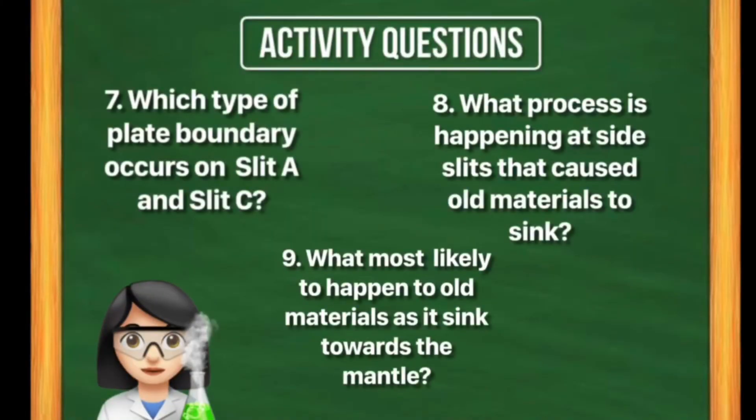Activity questions: Number 7, which type of plate boundary occurs on slit A and slit C? Number 8, what process is happening at side slits that cause old materials to sink?